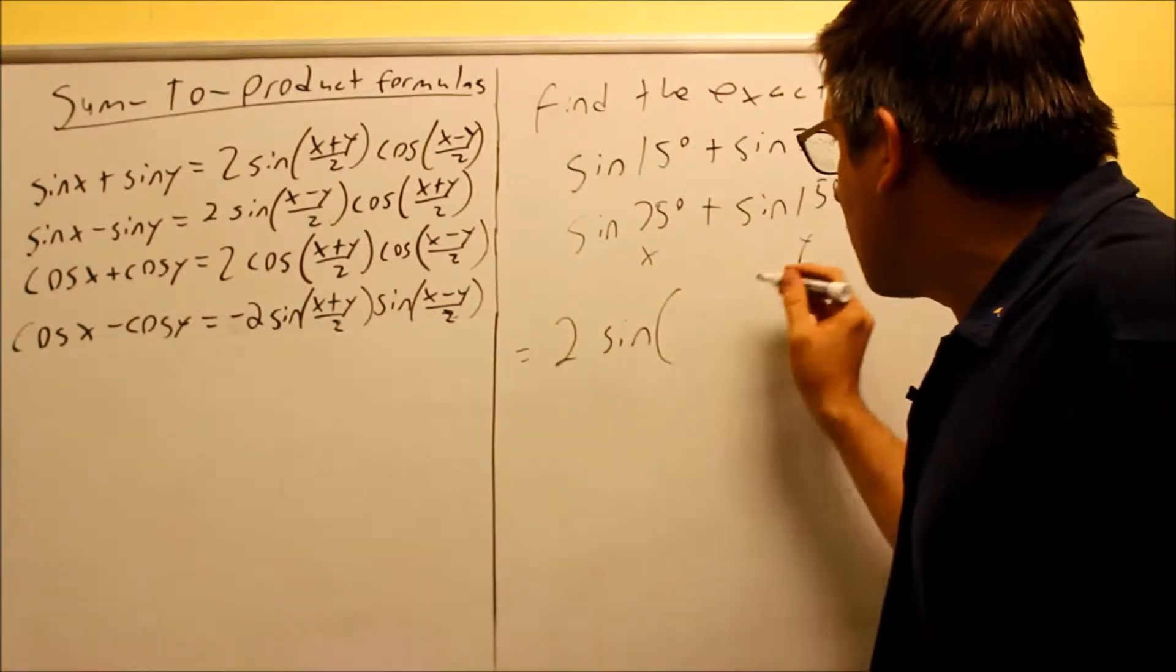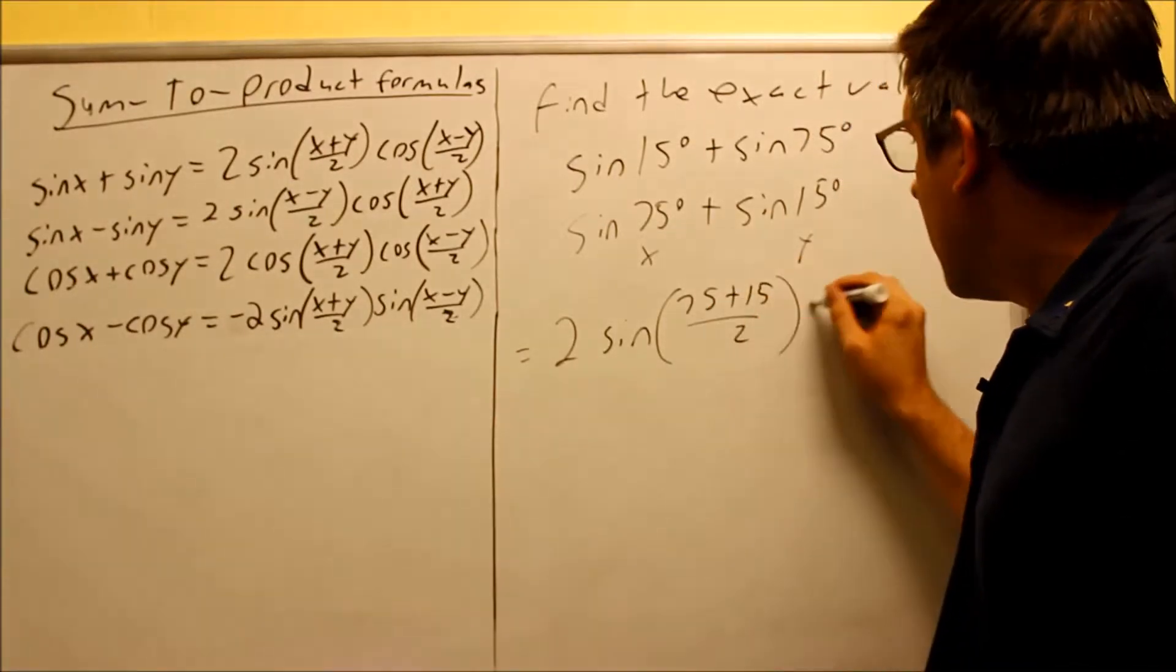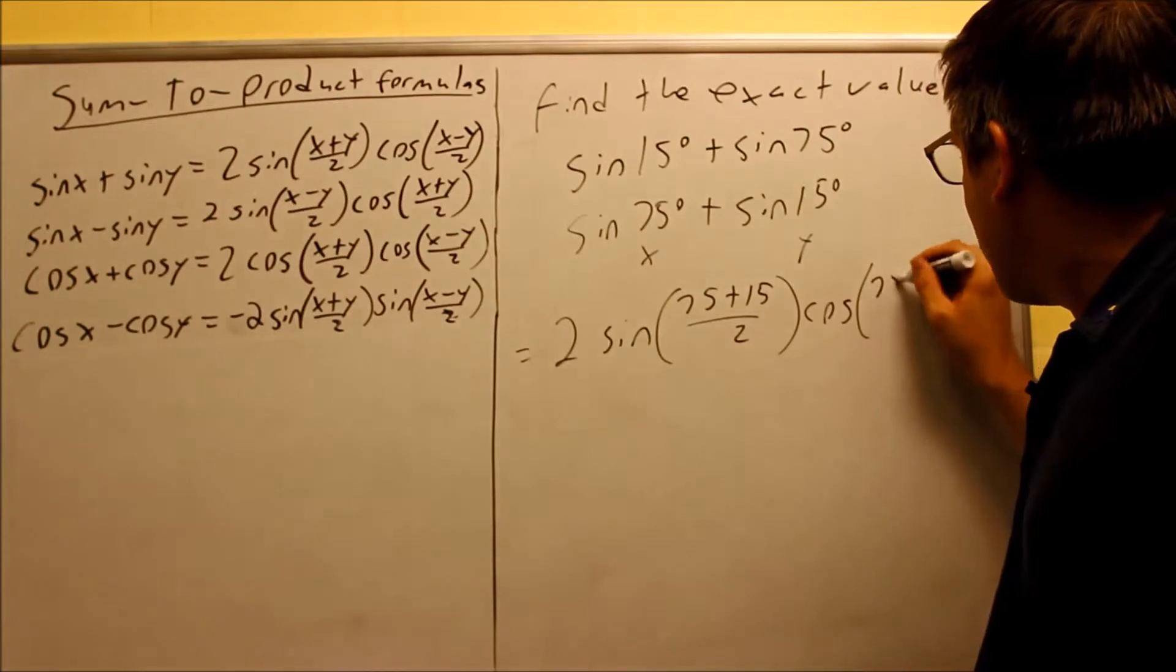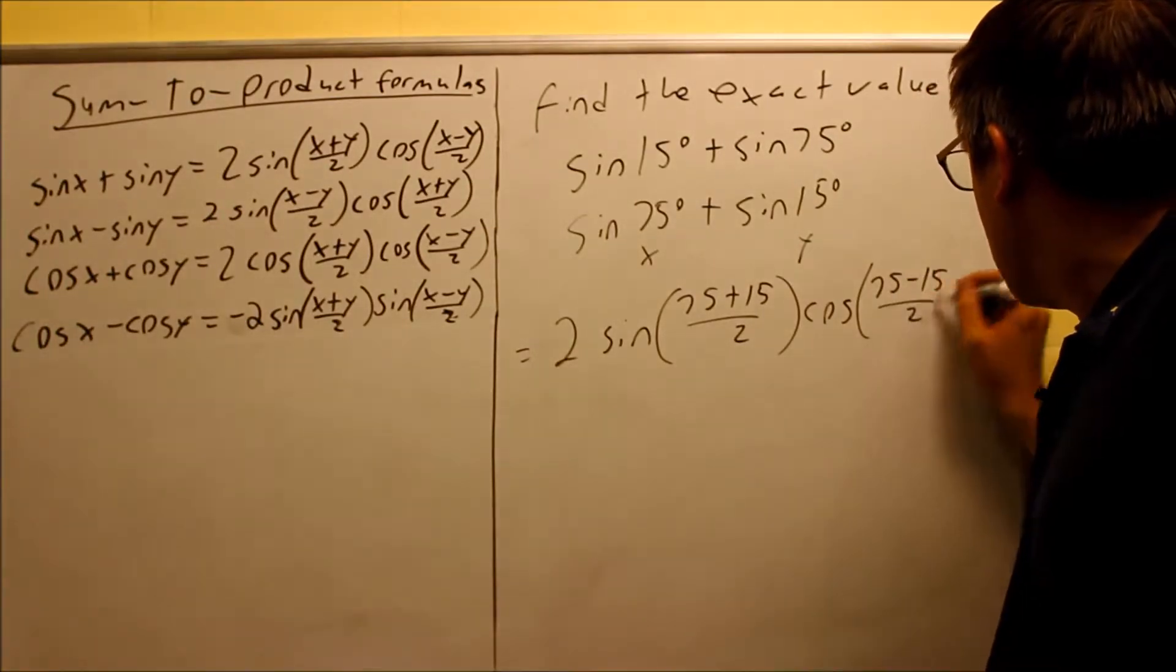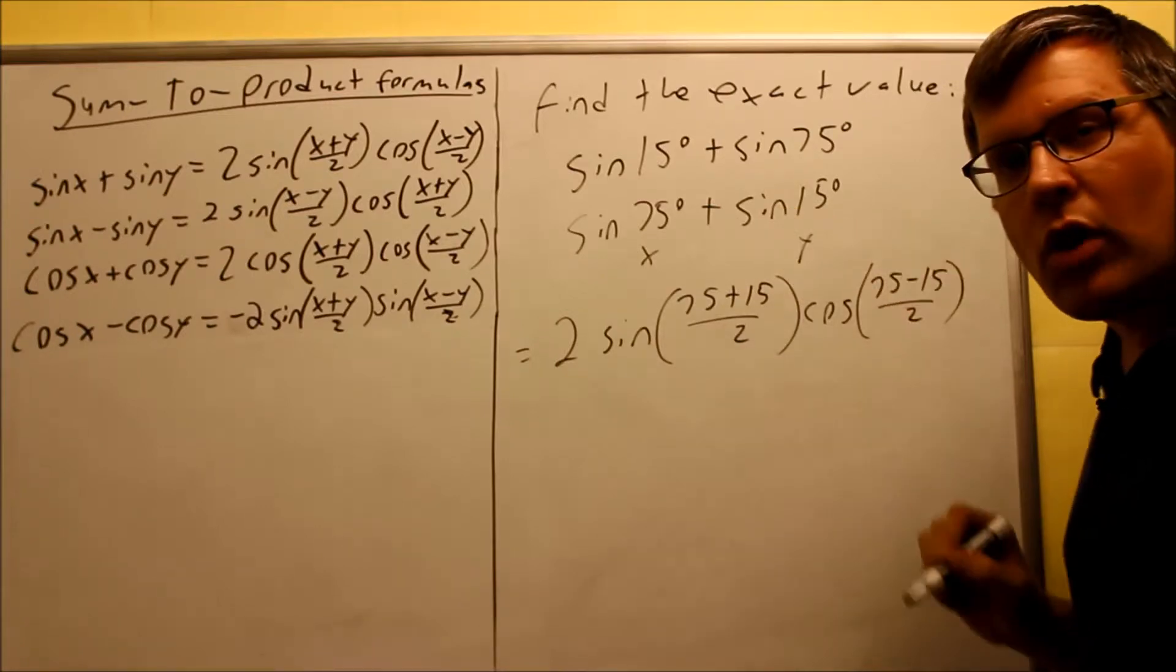We have 2 sine of x plus y, 75 plus 15 over 2. And then I have cosine of 75 minus 15 over 2. So just using the x and the y, x is 75 and y is 15.